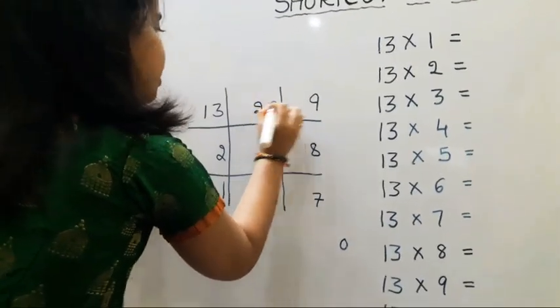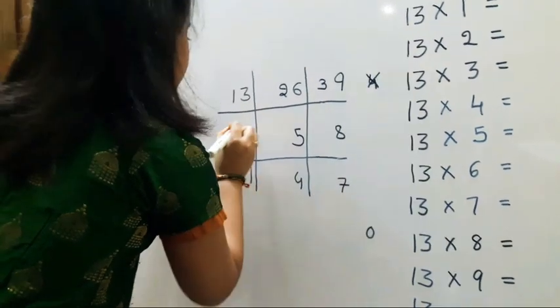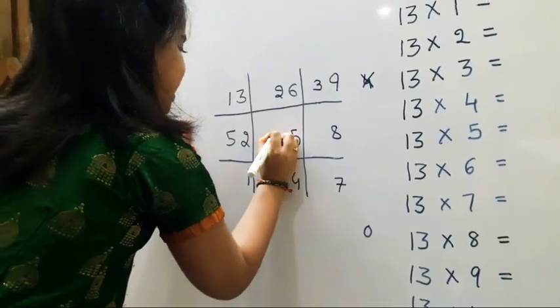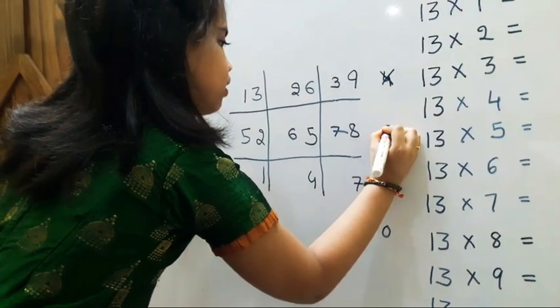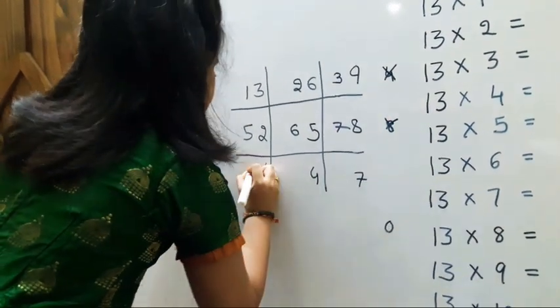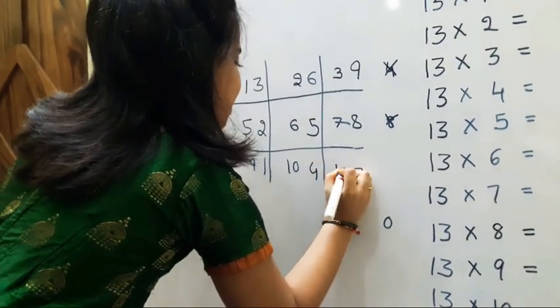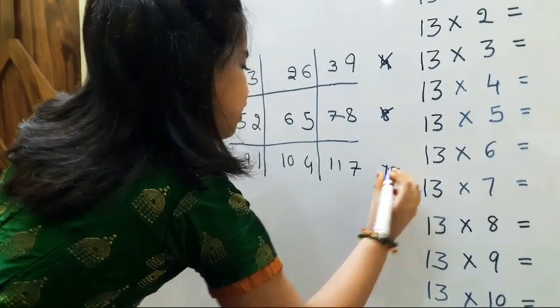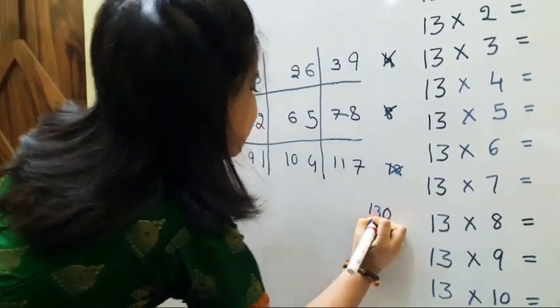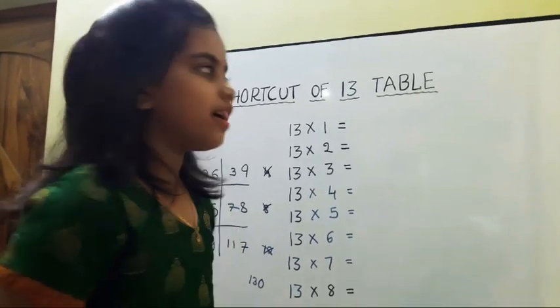1, 2, 3, skip 3, 4, 5, 6, 7, skip 8, 9, 10, 11, skip 12. Now here we should write 13. So that 13 table follows this order.